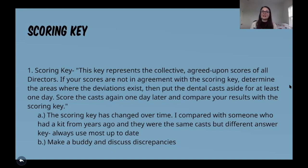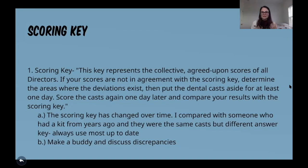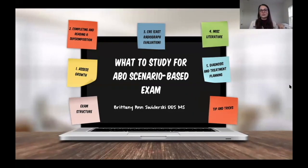If you're buying the calibration kit from someone else who used it for a case-based exam years ago, be aware that the answer key has changed over time. Use the most up-to-date key, which you get when you purchase it from the ABO site. It's also helpful to have someone local you can sit down with — you can only get so much from FaceTime. If you can do these three skills quickly, you'll have more time for the big bulk of the exam: diagnosis and treatment planning.